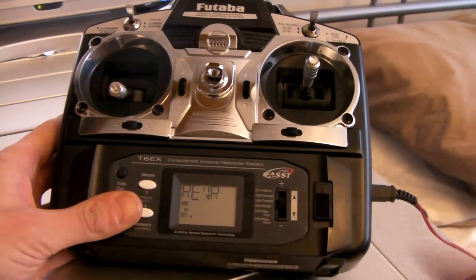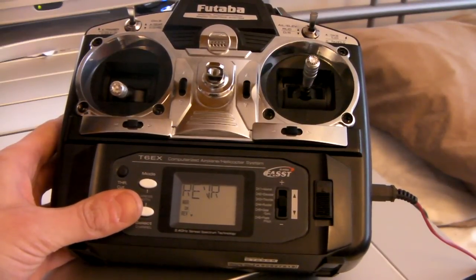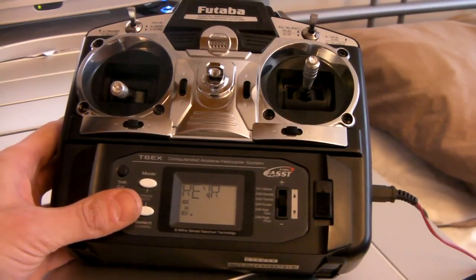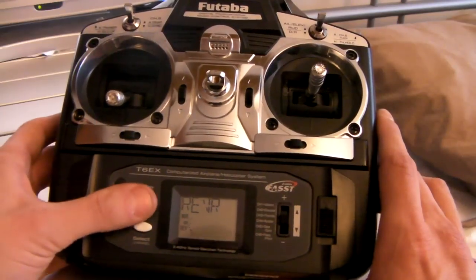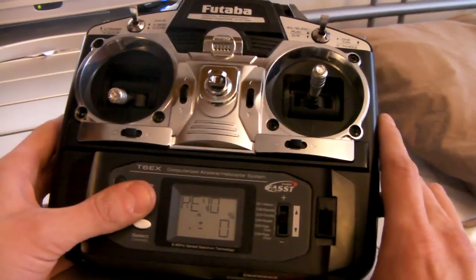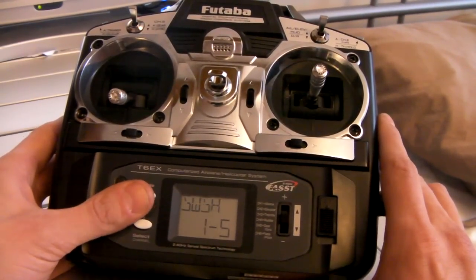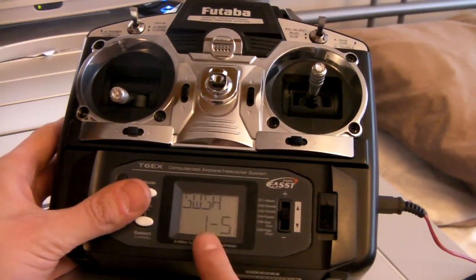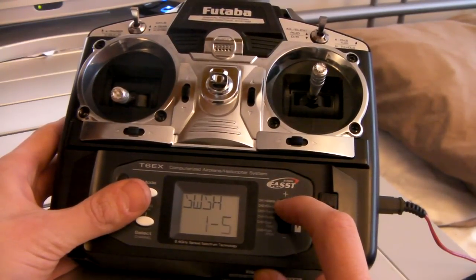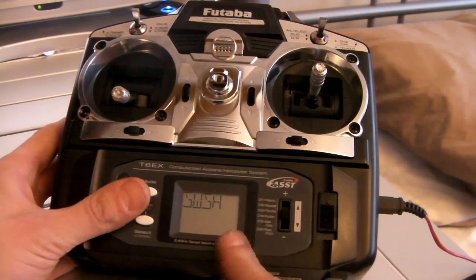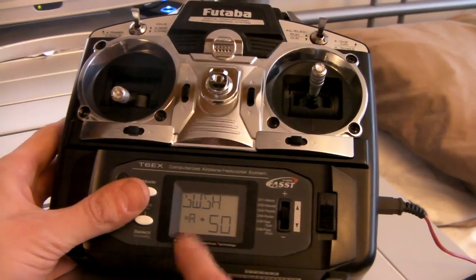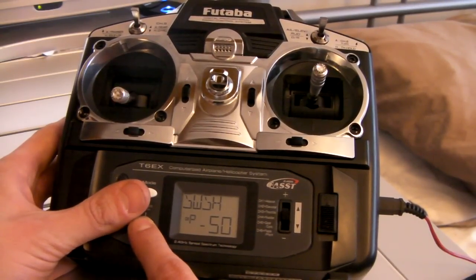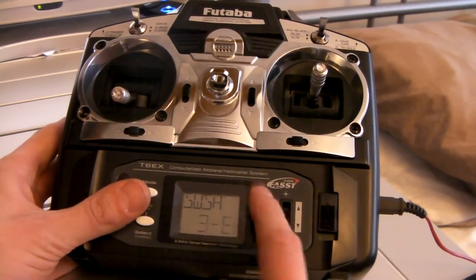Also, we're going to go into our swash menu. You want to set that to 90 degrees swash, which is 1S. Normally when you set it up through your transmitter, it's 3E so you can set your elevator and pitch. We don't want that, so we want to set it to 1S or whatever you want to do.